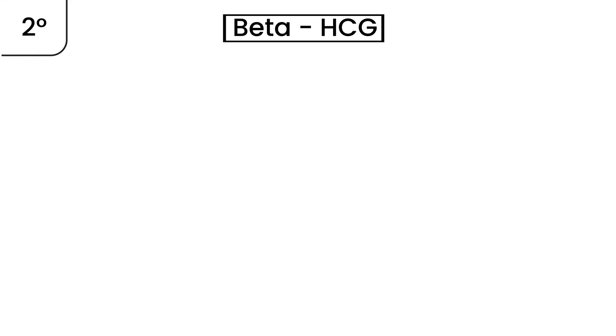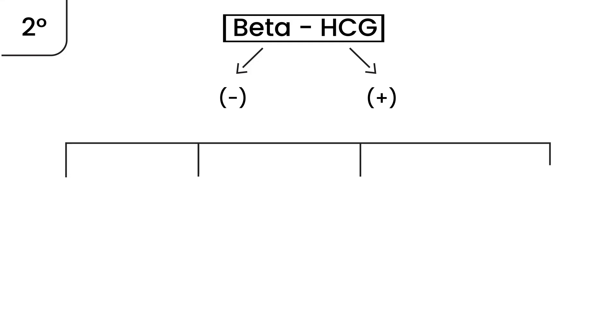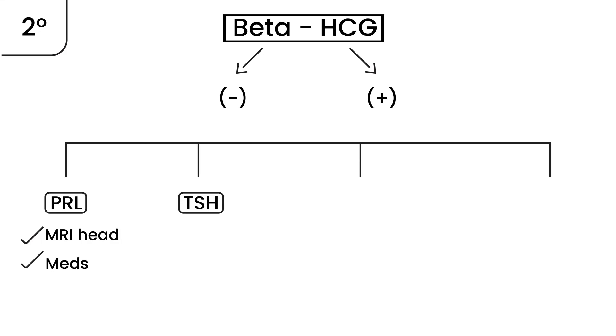For secondary amenorrhea — a woman who had regular menses and then stopped for three months or three cycles — the very first thing is the pregnancy test. If positive, she's pregnant. If negative, the first hormones to check are prolactin and TSH. Elevated prolactin most commonly points to a pituitary adenoma, so you want imaging like an MRI of the head, and you also want to check medications since antipsychotics can cause elevated prolactin due to decreased dopamine. TSH is a simple blood test to check the thyroid.